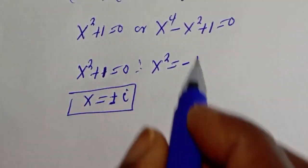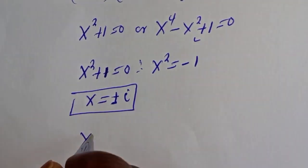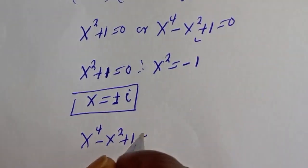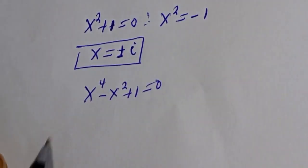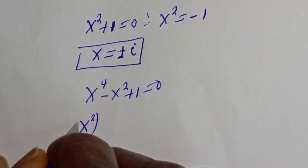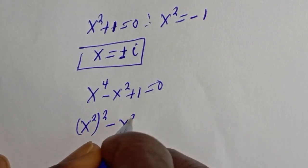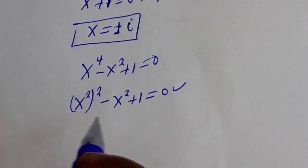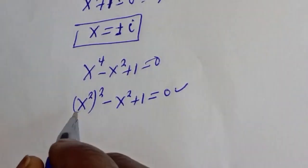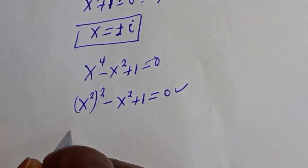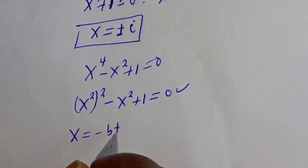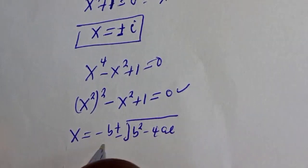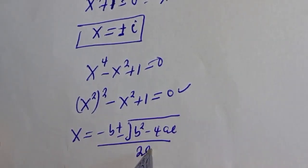Now let's consider the second sub-case: s raised to power 4 minus s squared plus 1 is equal to 0. This can be written as s squared, squared, minus s squared plus 1 is equal to 0. This is a quadratic equation which can be solved using the quadratic general formula: s squared equals minus b plus or minus square root of b squared minus 4ac over 2a.